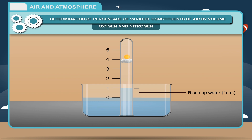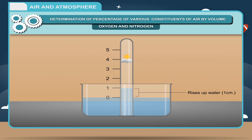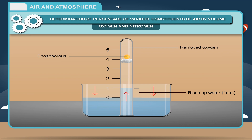Why is there a rise in water level inside the test tube? It is because oxygen present in air inside the test tube slowly reacts with phosphorus to form phosphorus pentoxide: P + O₂ → P₂O₅. As the volume of oxygen is completely removed by phosphorus, the pressure of air within the test tube falls, and air from outside forces the water up to rise in the test tube.